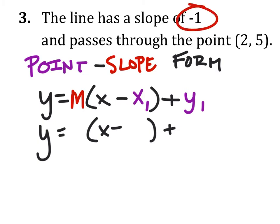What is our slope? Negative 1. So I replace my slope with negative 1. What's my x value? 2. What's the y value in the point? 5. So now we have this set up.